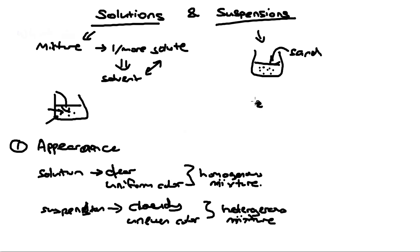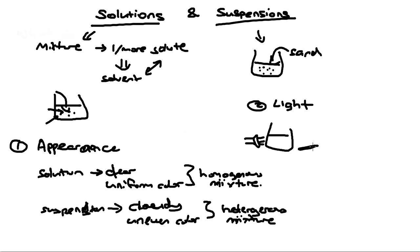Another way to distinguish them is using light. If you shine a torchlight across a beaker of mixture and you can see the light completely on the other side, that means the light passed through and you know there is a solution — there are no solutes blocking the light. Whereas if you have a suspension with a lot of particles inside and you shine a light, the particles block it, so you get very little or no light on the other side.